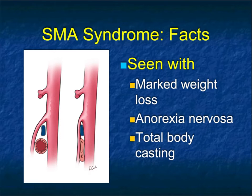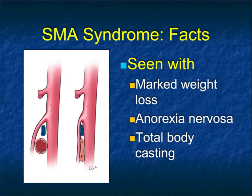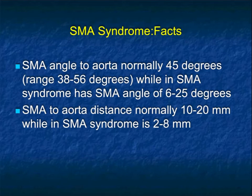We also talk about SMA syndrome, where the vessel is not narrowed but the angle of the vessel to the aorta is decreased. Classically described in patients placed in whole body casts, we now see it in patients with marked weight loss and anorexia nervosa. A decreased SMA angle alone doesn't mean SMA syndrome — you also need a dilated duodenum. Classic numbers: SMA syndrome angle typically under 10 degrees and the distance SMA to aorta under 10 millimeters.